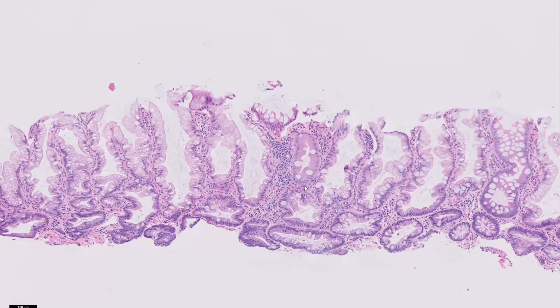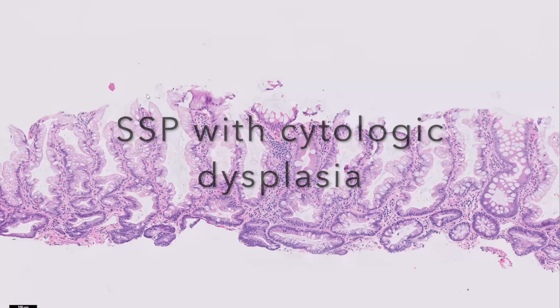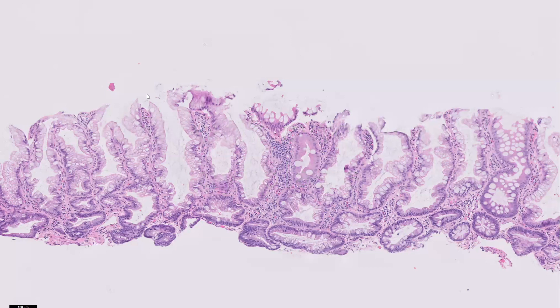That said, it can develop low-grade dysplasia. When that happens, you have these features extending all the way to the surface, and it will be called a sessile serrated polyp with cytologic dysplasia. We don't really grade the dysplasia as high-grade or low-grade — the fact that it's there is a very bad sign.